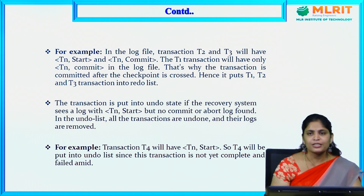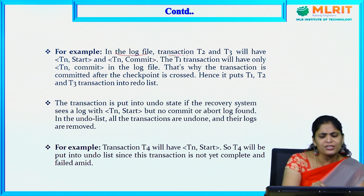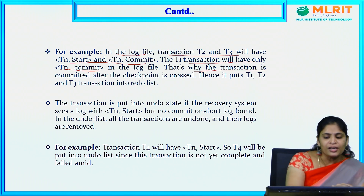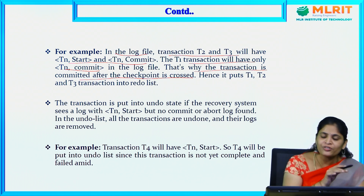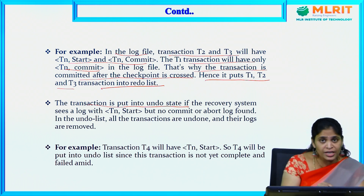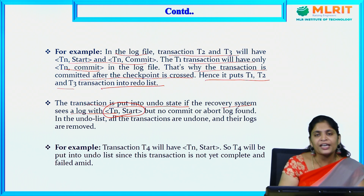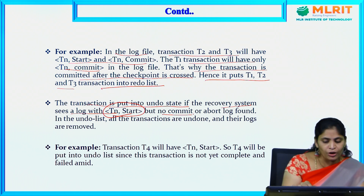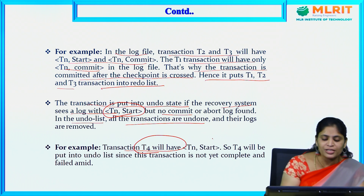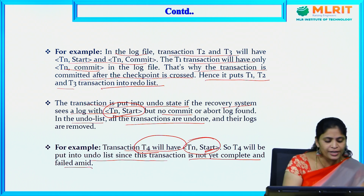In the log file, T2 and T3 will have both TN start and TN commit. T1 will have only TN commit since its transaction was committed after the checkpoint was crossed. Hence T1, T2, T3 are put into the redo list. Transaction T4 will be in the undo state because it has only a start operation and no commit or abort — T4 is put into the undo list since the transaction was not yet completed and may have failed.